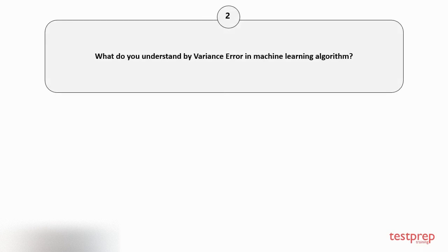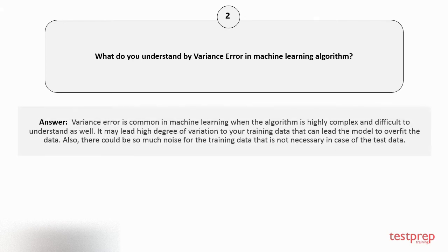Question number two: What do you understand by variance error in machine learning algorithm? Variance error is common in machine learning when the algorithm is highly complex and difficult to understand as well. It may lead to high degree of variation in your training data that can cause the model to overfit the data. Also, there could be so much noise in the training data that is not necessary in case of the test data.